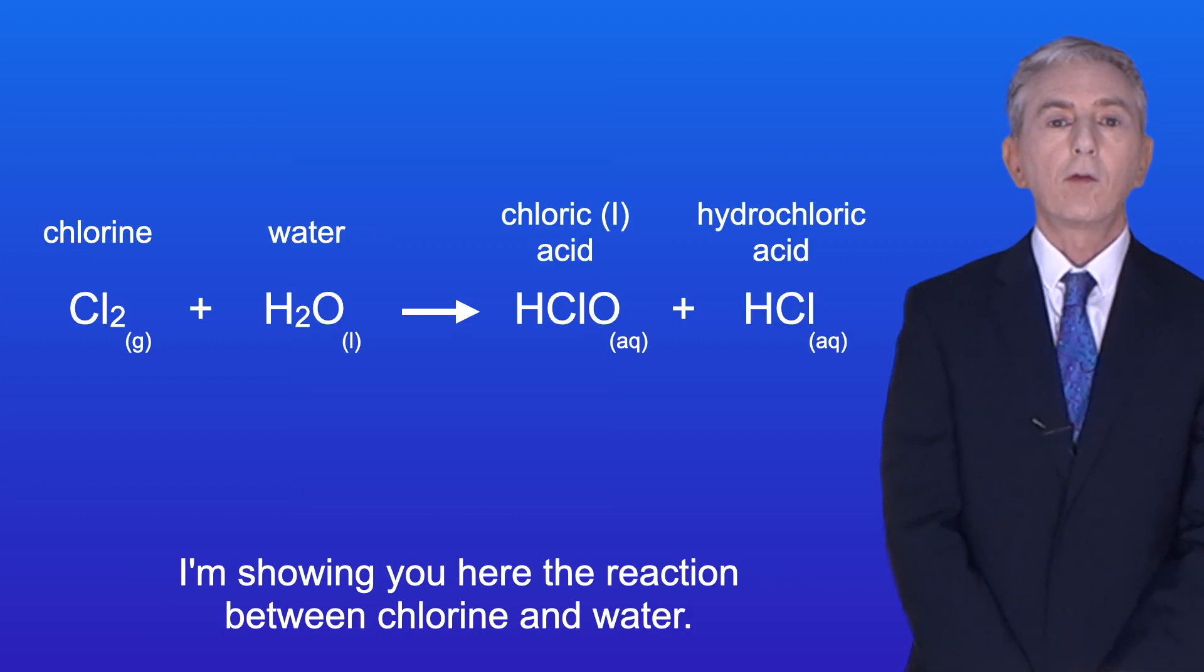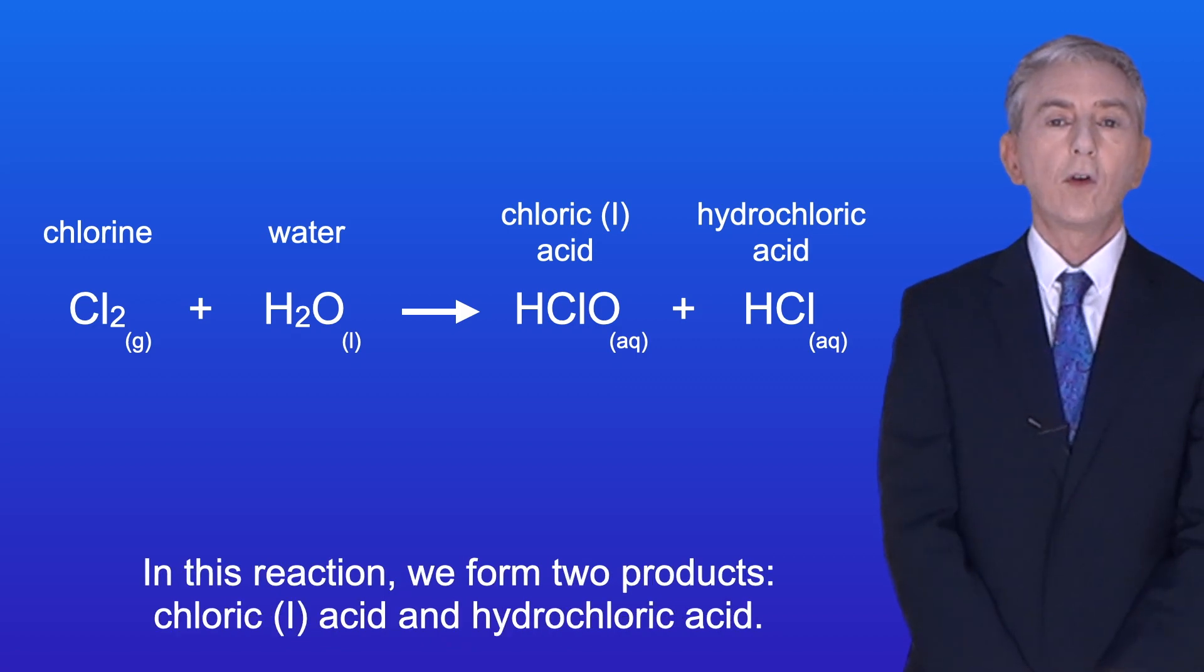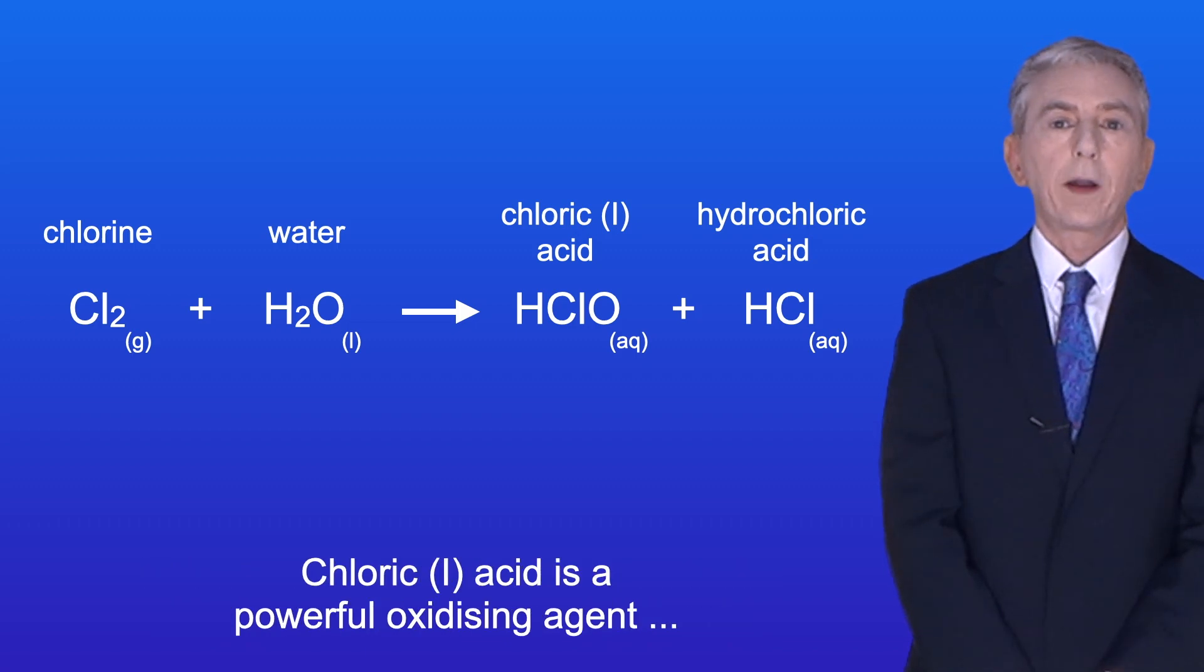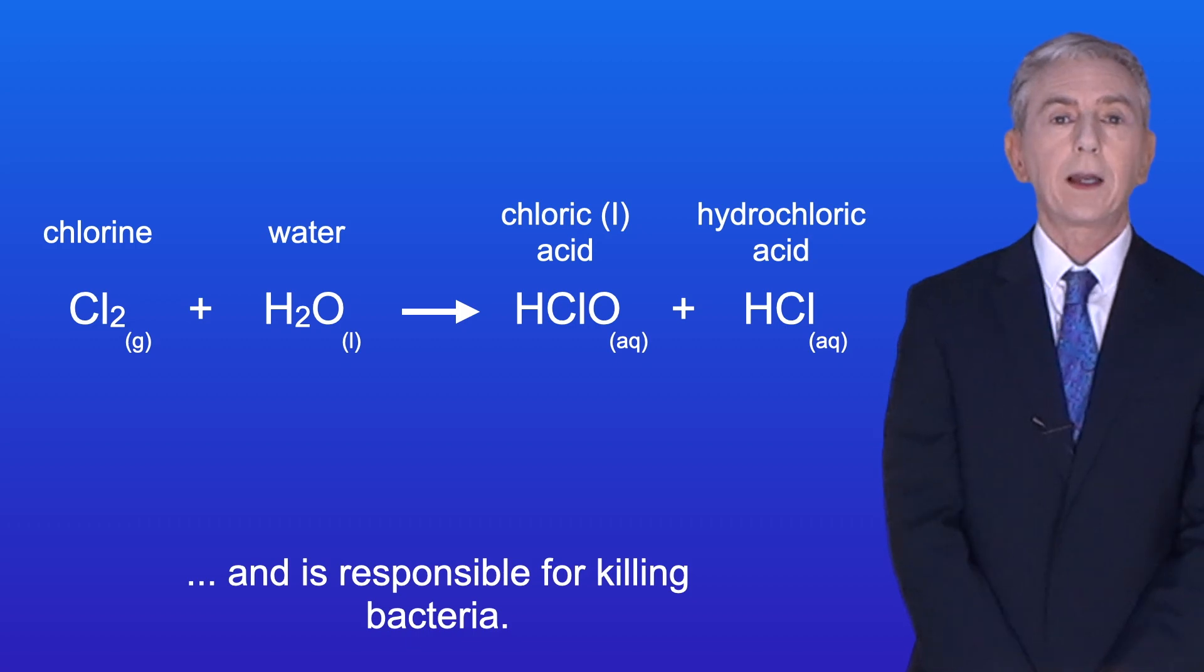I'm showing you here the reaction between chlorine and water. In this reaction we form two products: chloric 1 acid and hydrochloric acid. Chloric 1 acid is a powerful oxidizing agent and is responsible for killing bacteria.